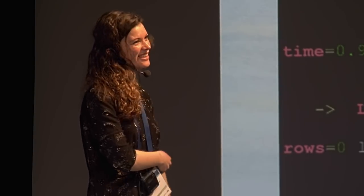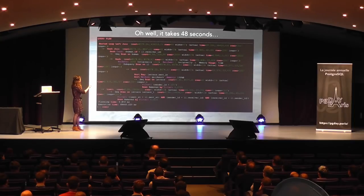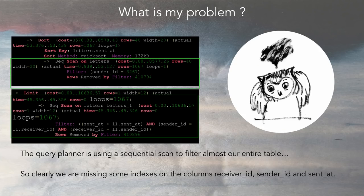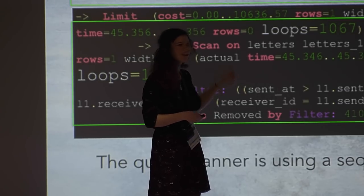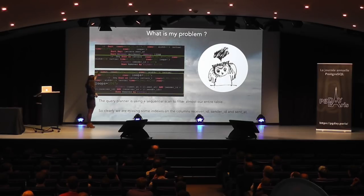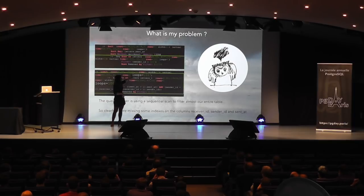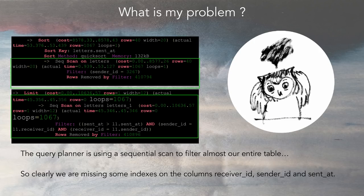Looking at the EXPLAIN output: it's doing a sequential scan on letters, filtering over 400,000 rows to take just 1,000. But the real problem is it's performing 1,000 loops. The sequential scan itself takes 45 milliseconds, but multiplied by 1,000 loops, that's 48 seconds total.